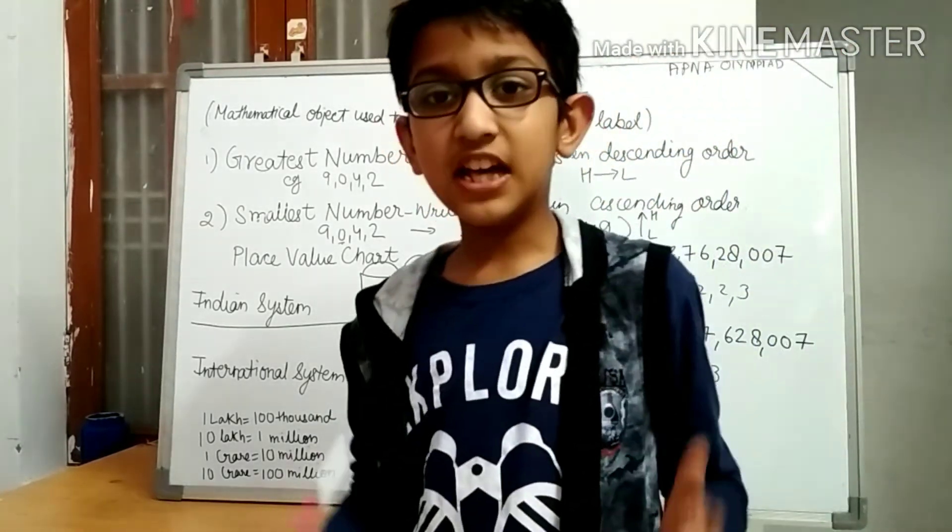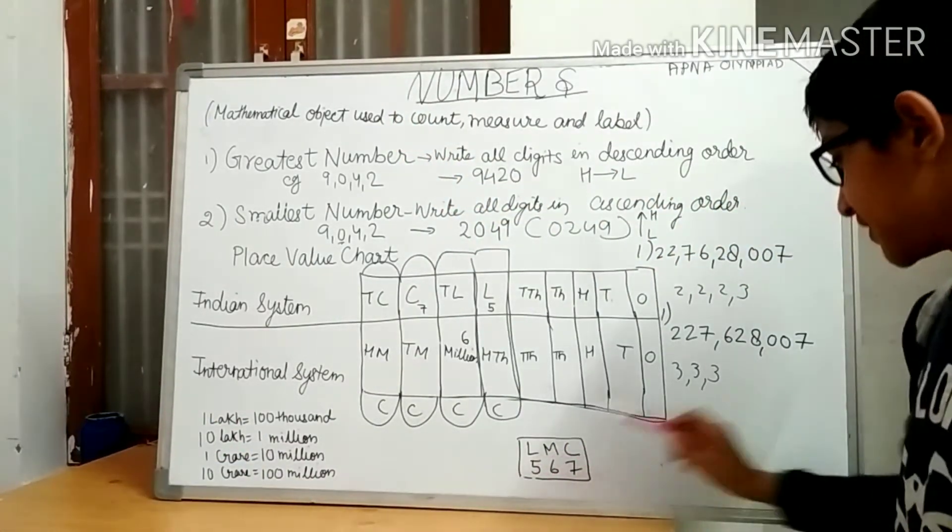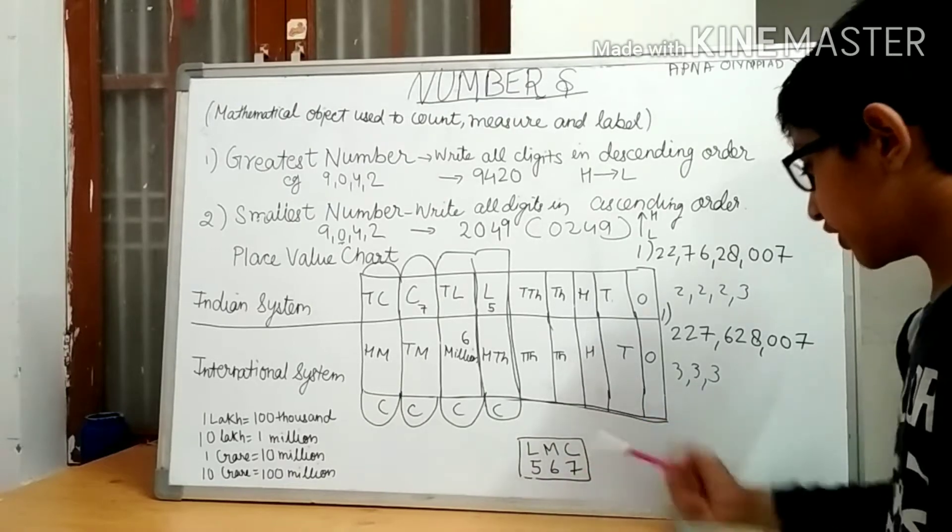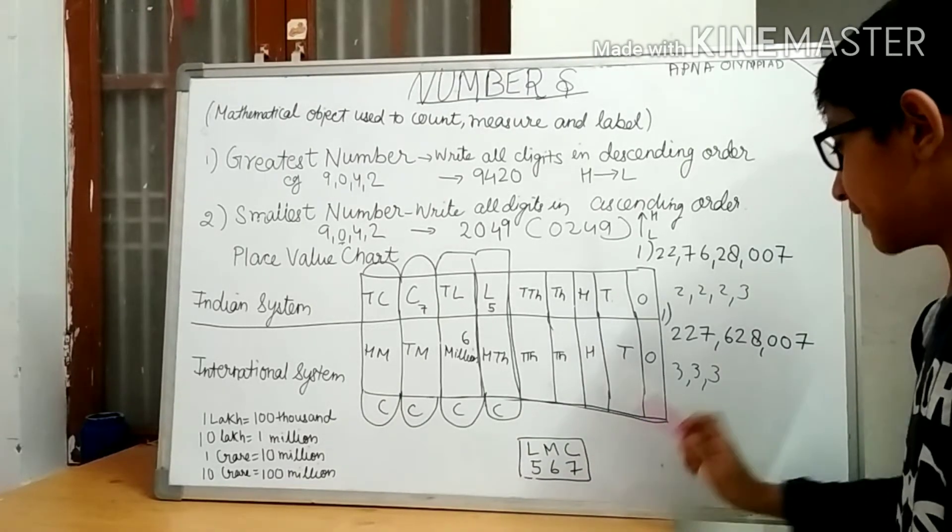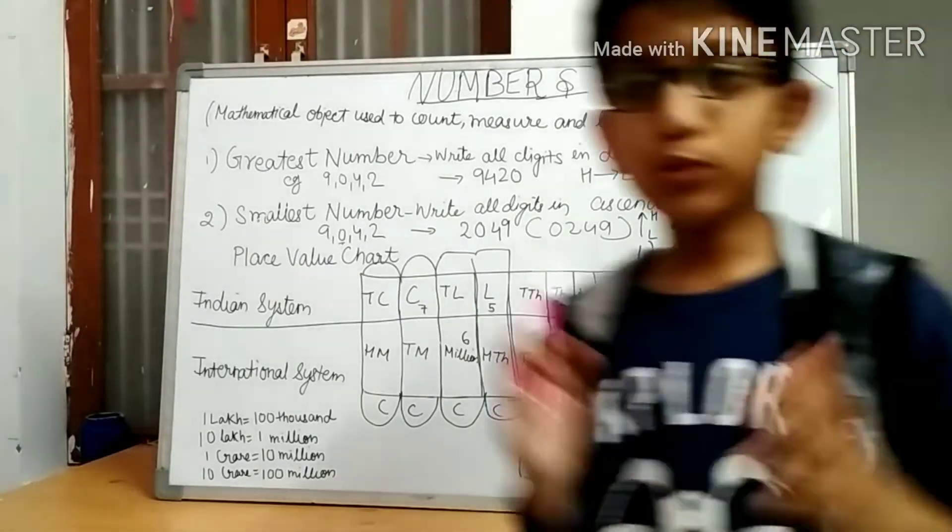The sentence is Lucknow Metro Corporation, LMC. Lakhs have five zeros, million has six zeros, and crore has seven zeros.